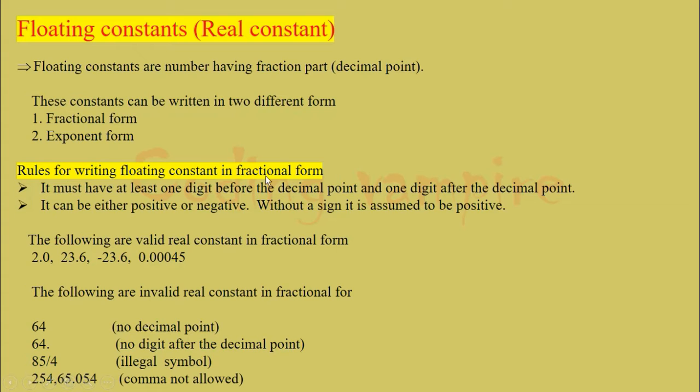Rules for writing floating constant in fractional form. It must have at least one digit before the decimal point and one digit after the decimal point. It can be either positive or negative. Without a sign, it is assumed to be positive. The following are valid real constant in fractional form. And here, these are invalid real constant in fractional form.